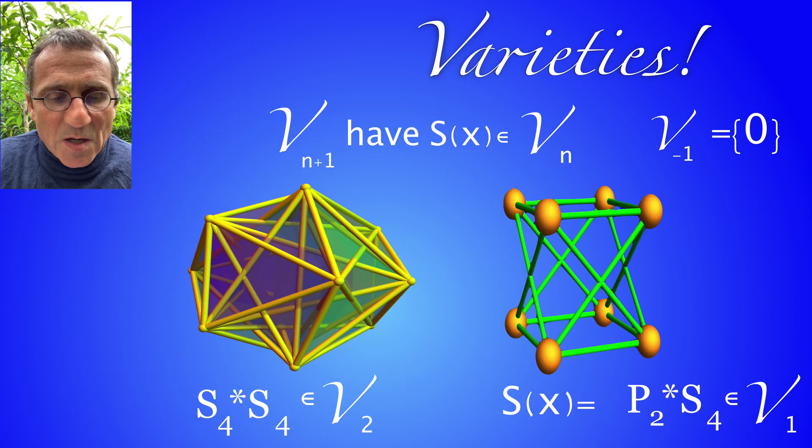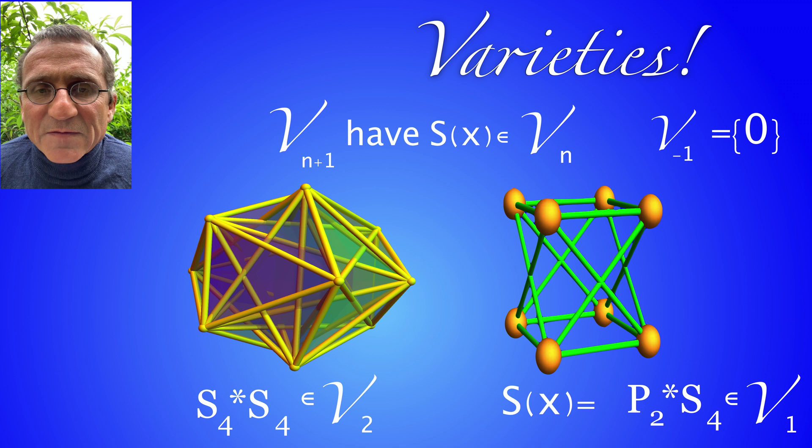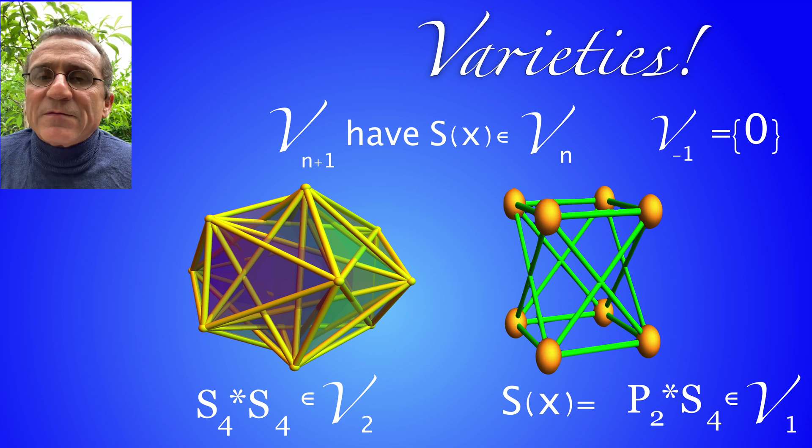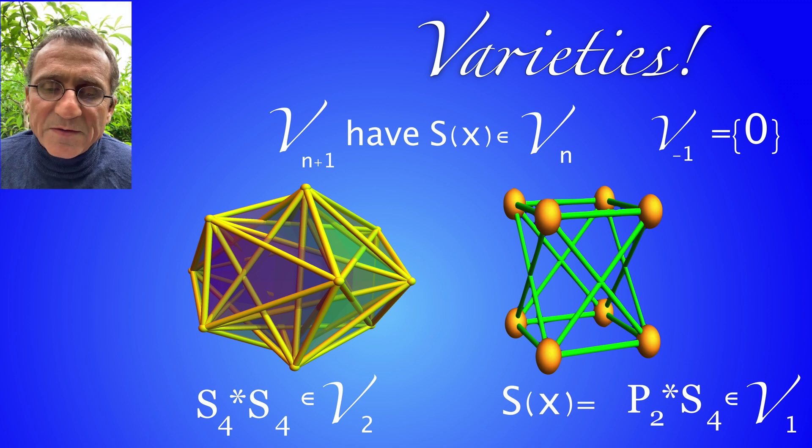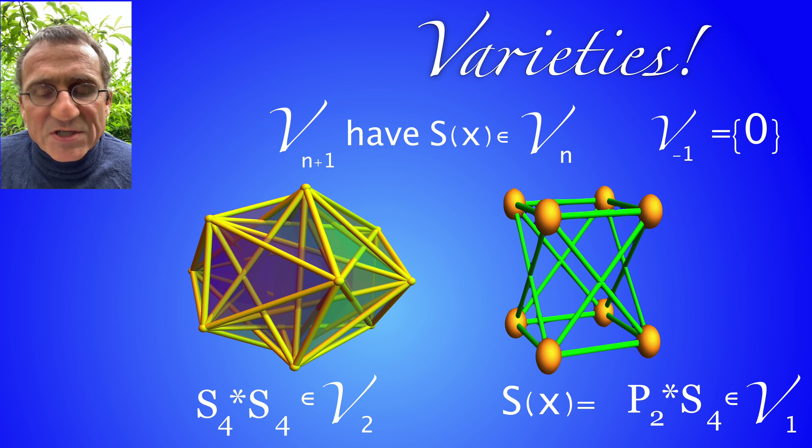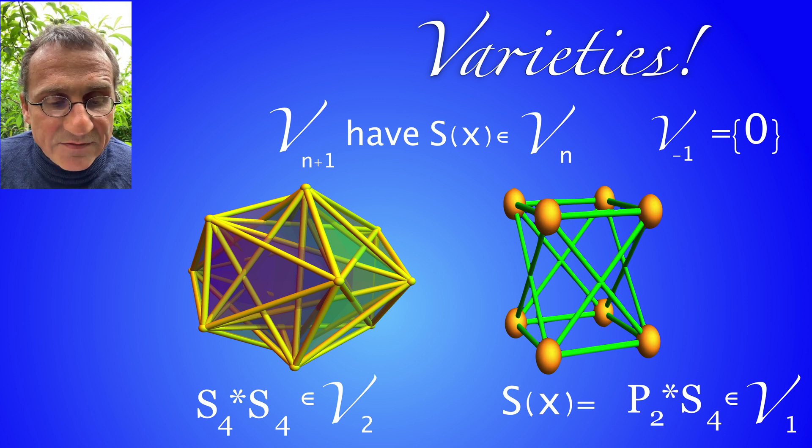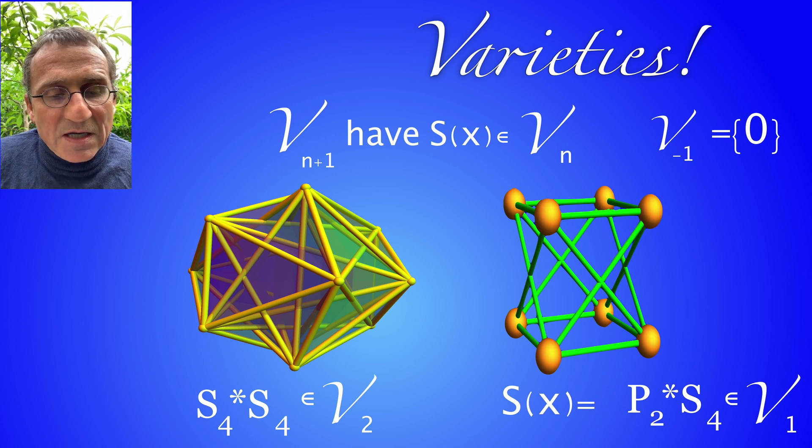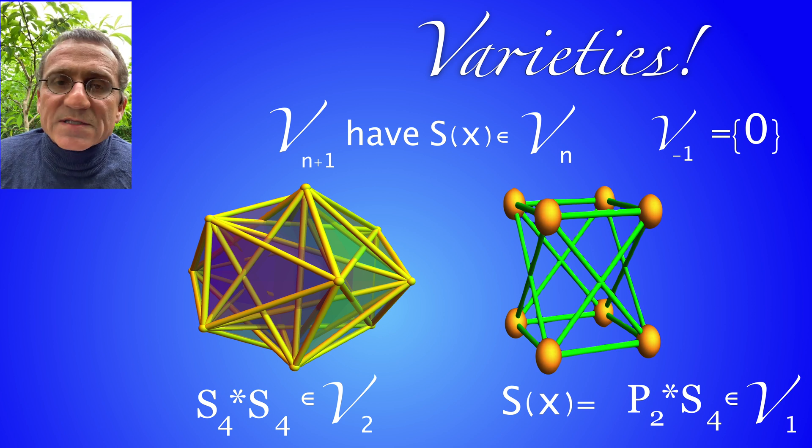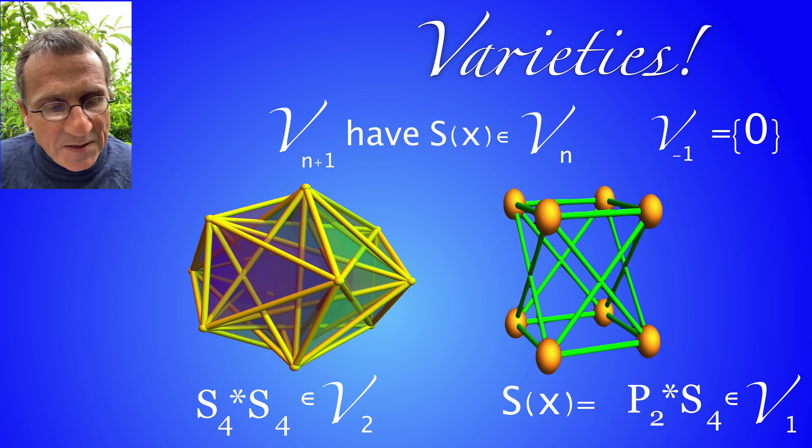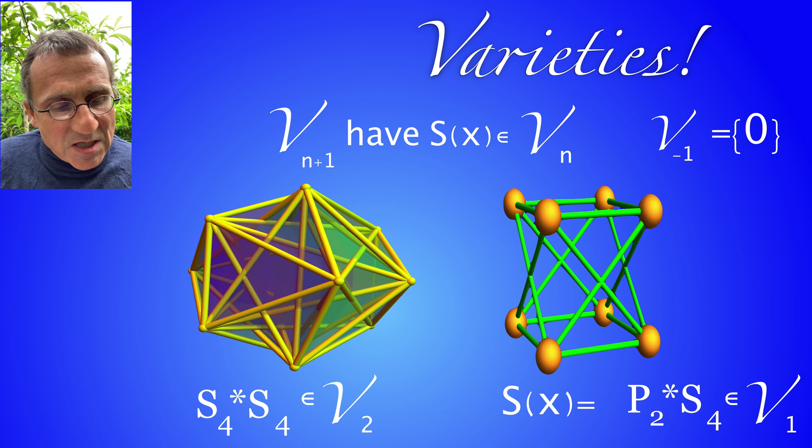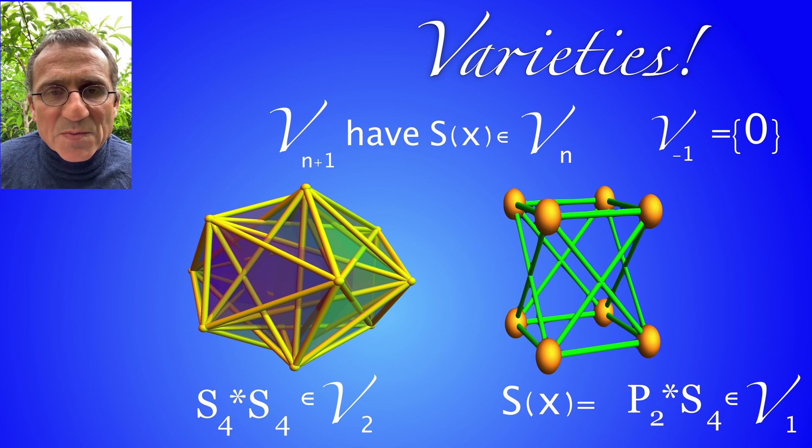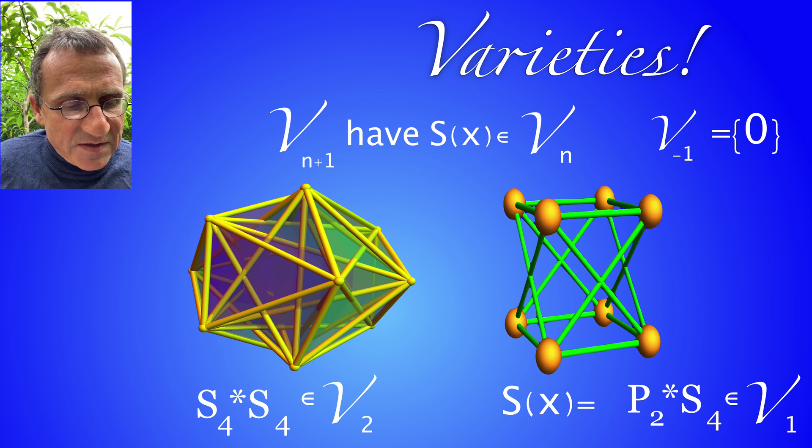For varieties, this is an example of a variety. Varieties are defined in an inductive way. We start with a zero graph which is v minus one and then we just ask for v_n that every unit of v_(n+1), we ask that every unit sphere is in v_n. And so here we see an example that these examples appear when we take products of spheres. In this case we've taken the product of two spheres and we got a variety.